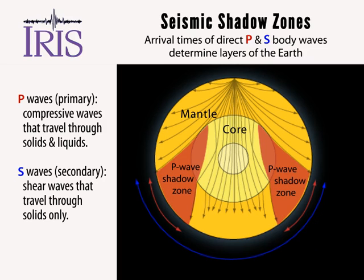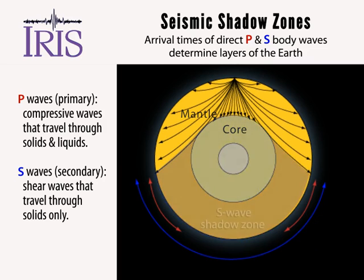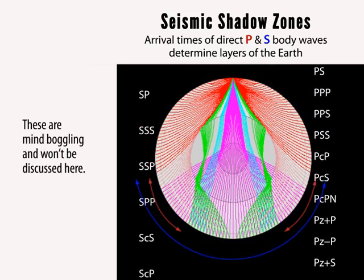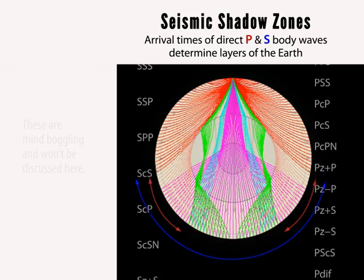The concept of a seismic shadow zone as a global effect of an earthquake is an oversimplification that ignores a broad array of refracted, reflected, and diffracted seismic waves that propagate through the Earth.